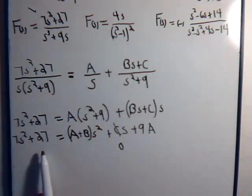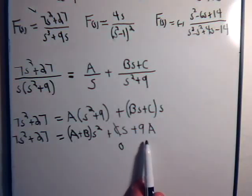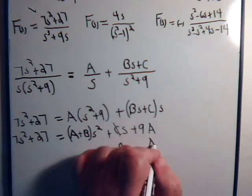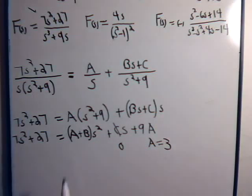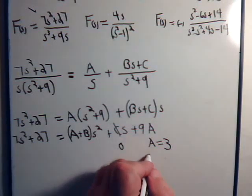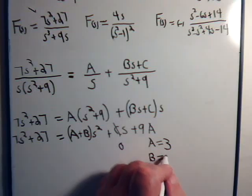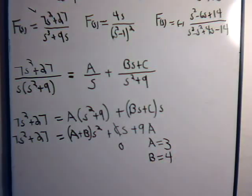And here there's a constant. And here there's a constant, 27. Here there's a constant, 9 times A. So we know right away, A equals 3. And we know A plus B has to be 7. So A equals 3. B equals 4. C equals 0.